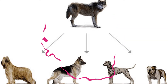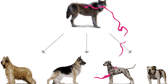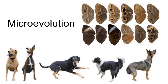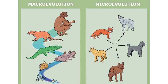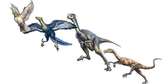Natural selection can change a species in small ways, such as causing a population to change color or size over the course of generations — this is micro-evolution. Given enough time and accumulated changes, natural selection can create entirely new species, known as macro-evolution.